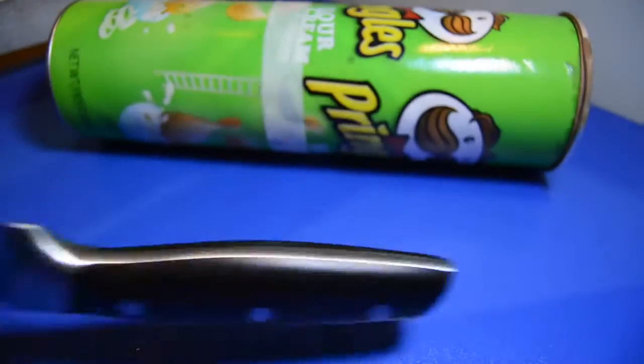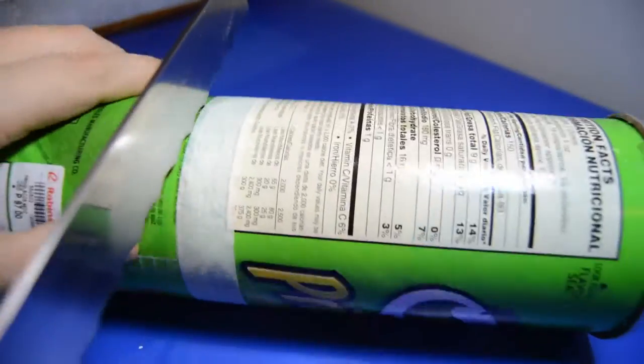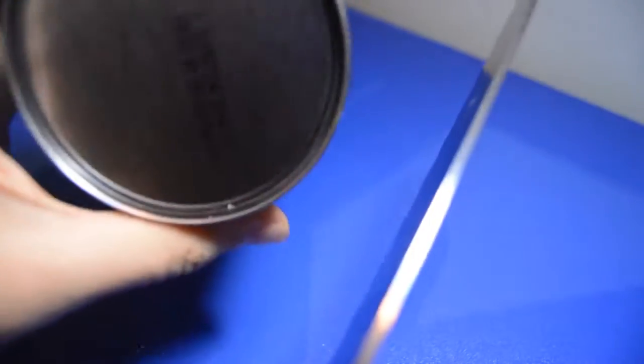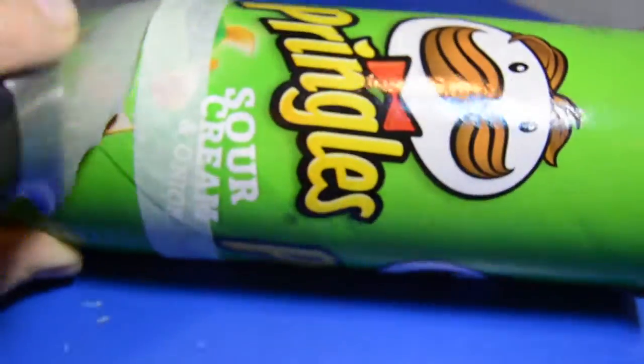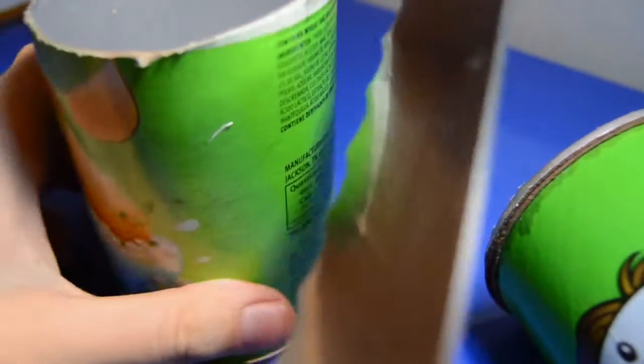Now, simply grab your knife and cut at the bottom of the Pringles container. Like this.